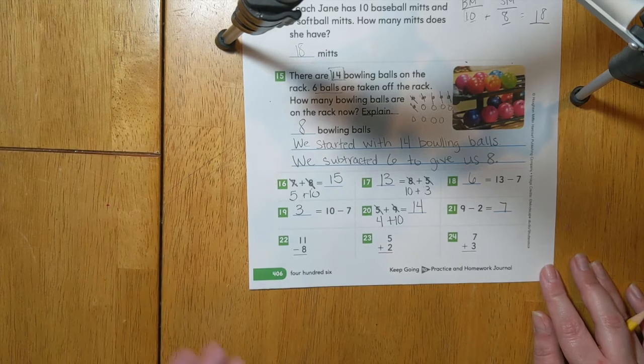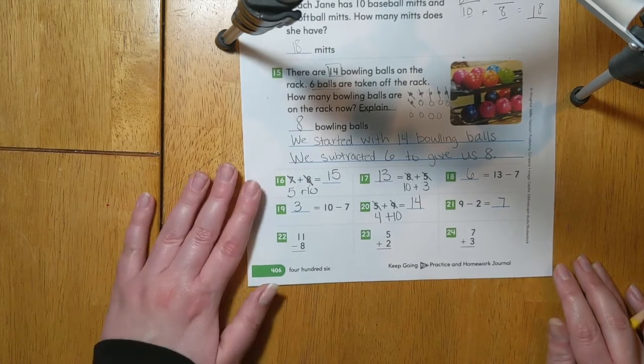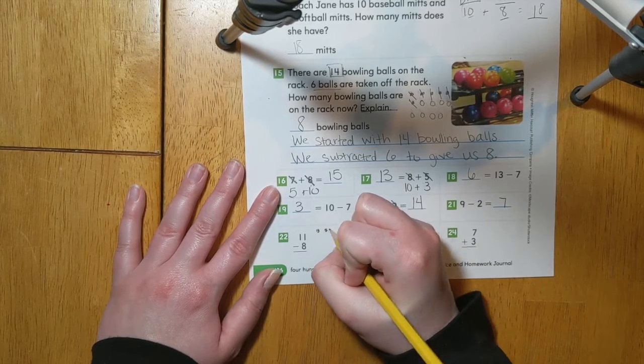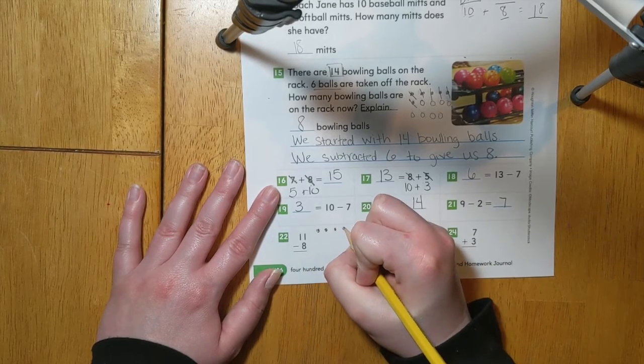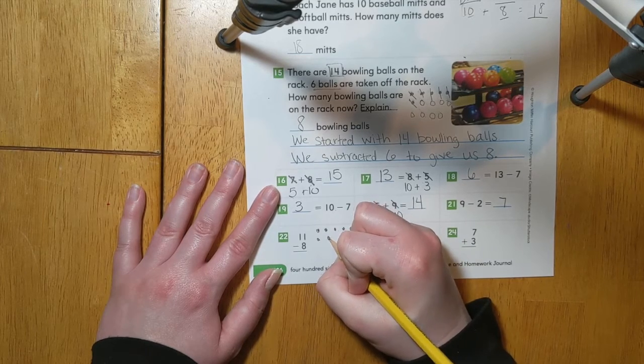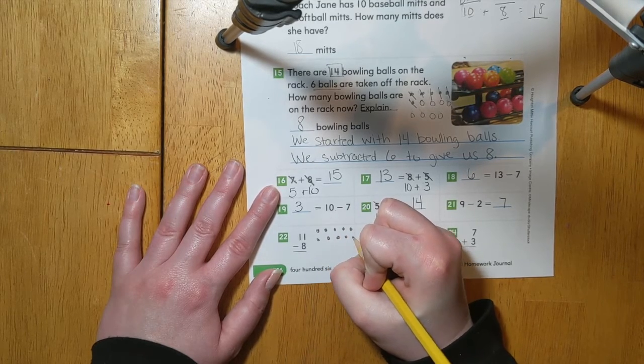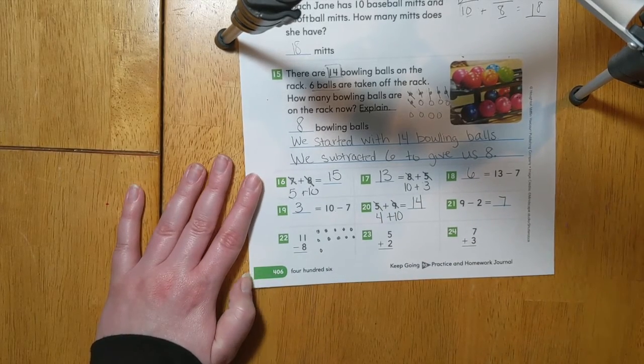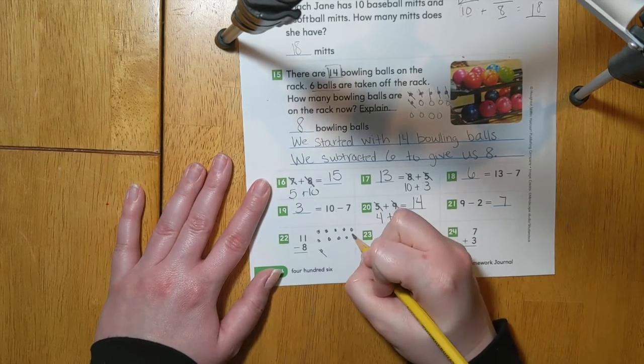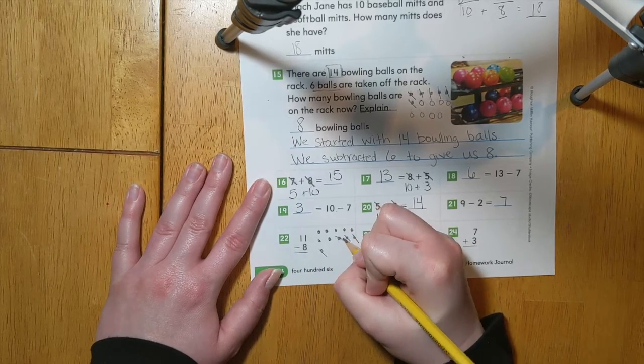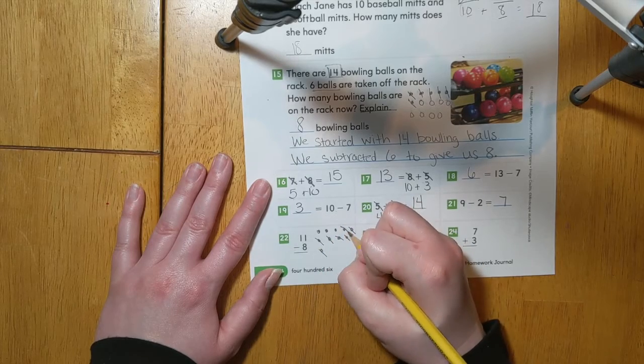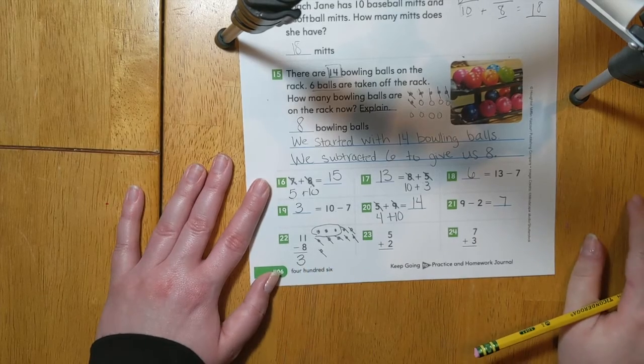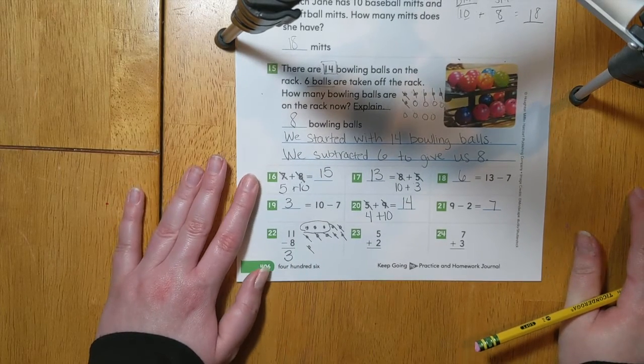For number 22, we have 11 minus 8. Let's go ahead and draw 11 ones. 1, 2, 3, 4, 5, 6, 7, 8, 9, 10, 11. Now, we'll cross out 8 ones. 1, 2, 3, 4, 5, 6, 7, 8. That leaves me with 3 ones. So 11 minus 8 equals 3.